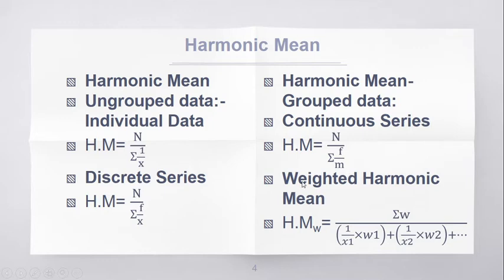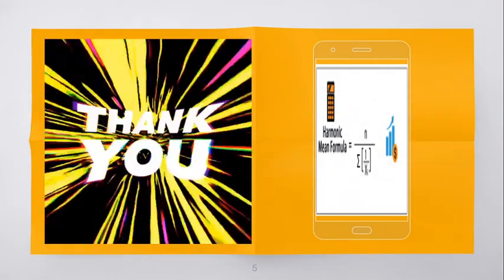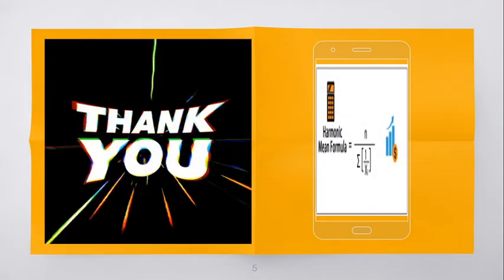With regard to weighted harmonic mean, the formula is as follows. Harmonic mean is equal to sigma w divided by 1 by x1 into w1 plus 1 by x2 into w2 and so on. This is the formula recap of harmonic mean.